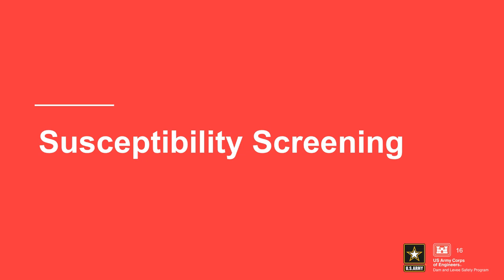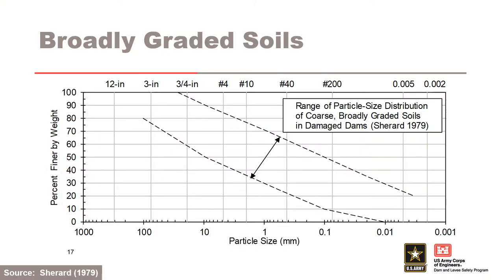A quick examination of the shape of the gradation curve is an easy but important first step for susceptibility screening. Sherrard, in his 1979 paper, plotted a band around gradations judged to be internally unstable from sinkholes in dams of coarse broadly graded soils, where internally unstable soil gradations usually plot as nearly straight lines or curves with only slight curvature. Sherrard's method is empirically based and designed to identify soils which will not self-filter. However, non-self-filtering, very broadly graded soils such as glacial soils that fall into the gradation envelope are also susceptible to internal instability.